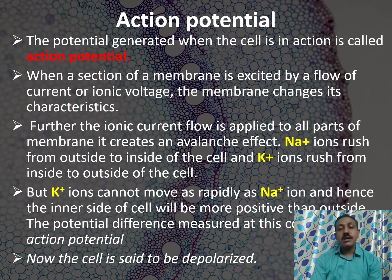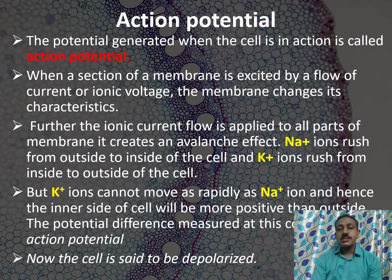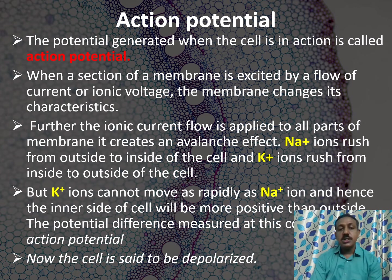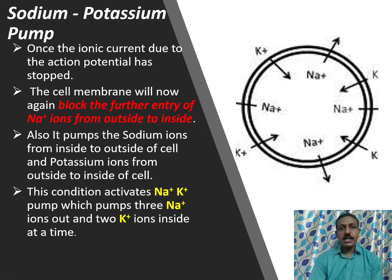Now, the Na+ ions will rush from the outside to inside of the cell, and K+ ions will rush from inside to outside of the cell. But the K+ ions cannot move as rapidly as Na+ ions. Hence, the inner side of the cell will be more positive than outside. The potential difference measured at this moment is called action potential. At this stage, the cell is said to be depolarized.